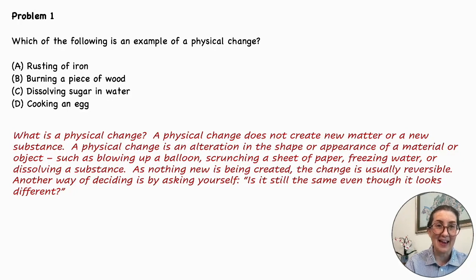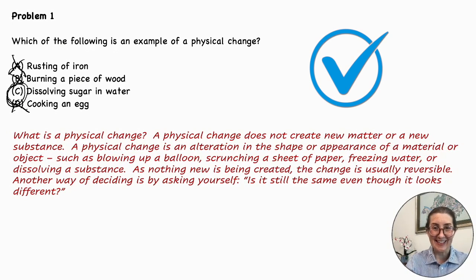Now let's look again at the answer choices. A. Rusting of iron is a chemical change and is not the correct answer. Burning a piece of wood is the same. It is a chemical change. Cooking an egg as well. Dissolving sugar in water: there's still sugar and there's still water. It looks different, but it's the same two substances. So the correct answer is C.